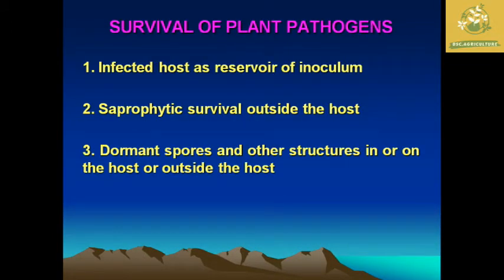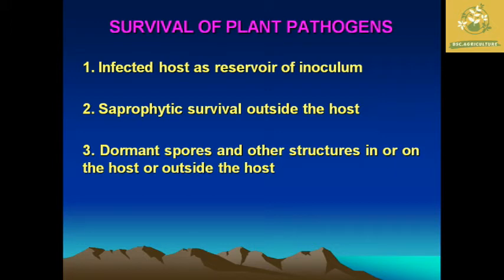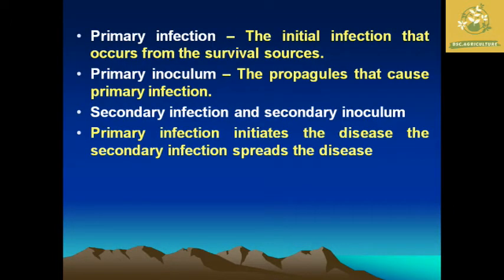Plant pathogens require a reservoir of inoculum, known as the infected host bodies, which act as a reservoir for their eggs, immature stages, and unproductive stages to get away from unfavorable environmental conditions. They also have saprophytic survival outside the host by going into dormant spore-like structures, and they use other structures inside or outside the host to survive unfavorable conditions.